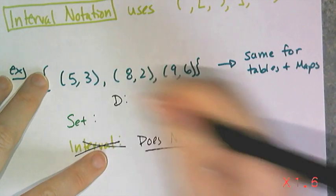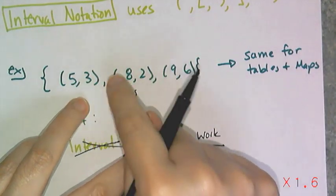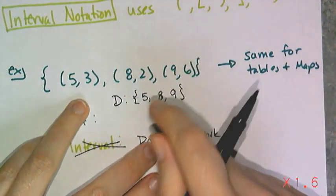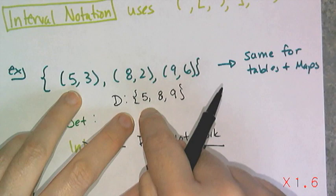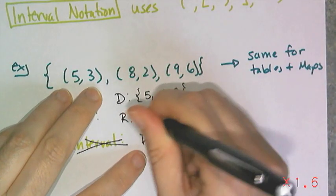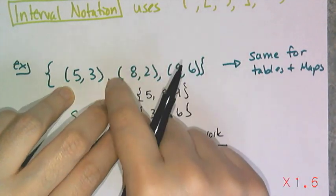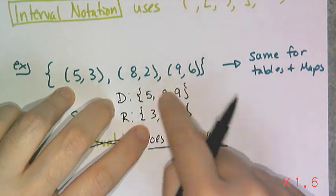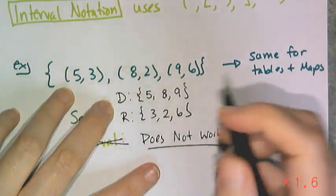All you do is for the domain, use 'D:' for domain, open up a set of braces, and then just insert all of the x values: 5, 8, 9. Now if there were repeated numbers — say there was a (5,3) and a (5,2) — I'm not going to write the 5 twice, I'm only going to write it once. For range, open up braces and list out the y values: 3, 2, and 6. Same thing for repeats — if a number is repeated in the range, don't repeat it. Sets are unordered, so the order doesn't matter, though sometimes you'll see them listed from least to greatest.